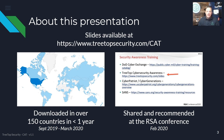The slides here are available at treetopsecurity.com/cat, and that's cybersecurity awareness training, which is what that's abbreviated for. That is important because inevitably I forget to mention that, and I'll see somebody hurriedly writing every single thing on every slide down until I remember to tell them they can download these.